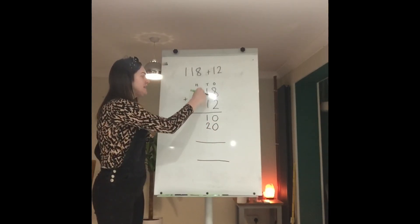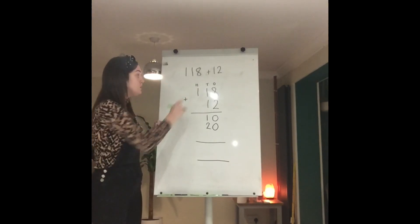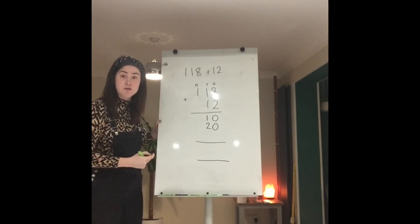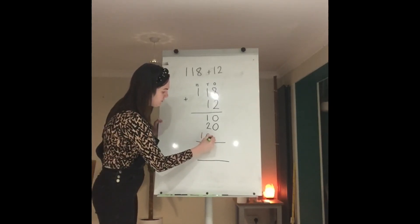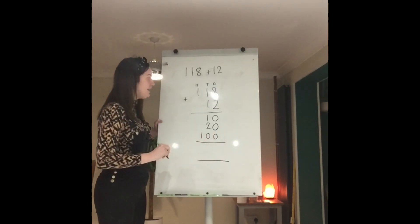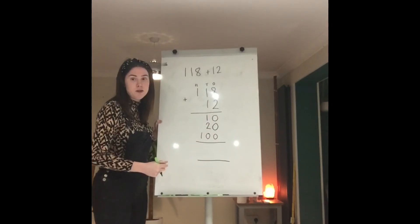Now I have my little friend here left, I should have said my big friend because it's in the hundreds column. It's not a one, it's a hundred. Now I need to add all these numbers together for my total.